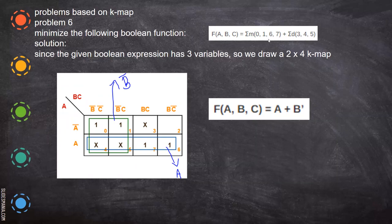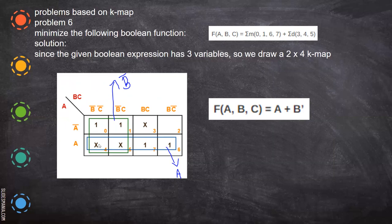If we take 0, 1, 6, 7 again, we need a three-variable map. Substitute one in the respective positions: 0, 1, and 6, 7. X in 3, 5, and 4. Now try to form the group. These two X's you can combine with this one and form a quad. And here you can form a quad. This cannot be combined, so just leave it. For this, all these things are gone, so we have A. And if you take this, A bar A is gone, C bar is gone, so we have B bar. So this is the reduced equation.